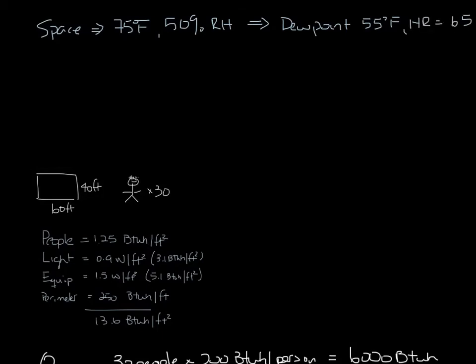Yes, I ran out of room there, but we'll move on. Let's say the supply air is 55 degrees with a 51 degree dew point, which gives it a humidity ratio of 55 grains per pound.